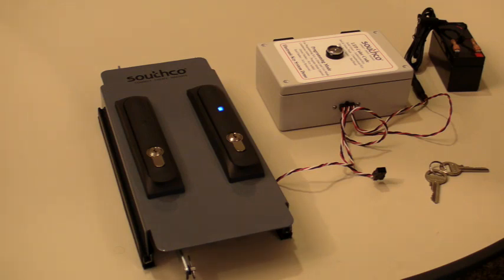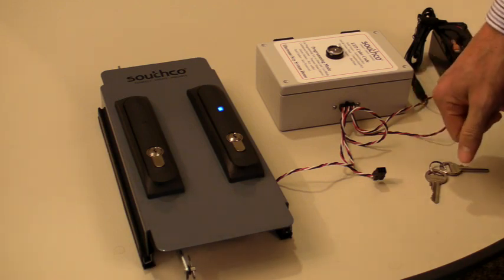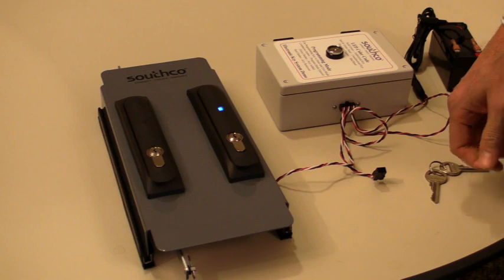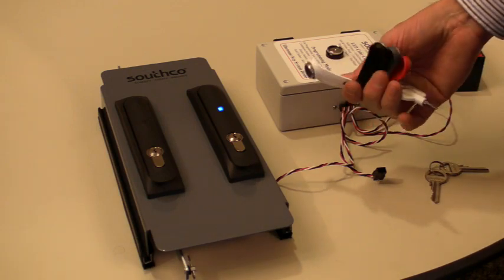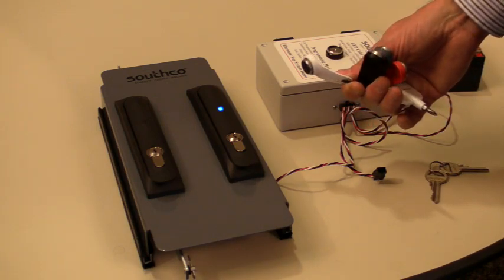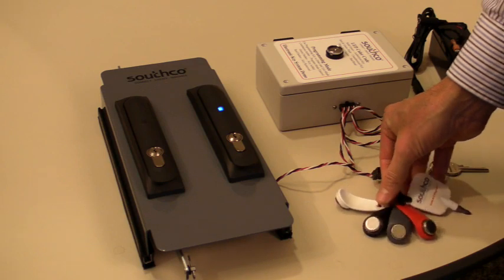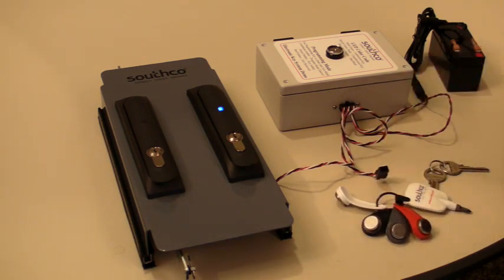We also can pair this latch with a number of remote access devices. What's shown in frame right now is our I button, it's an electronic key that will actuate it. It has a number of different electronic combinations. We also pair it with pin prox, prox card readers, keypads, as well as fingerprint readers if they're available.